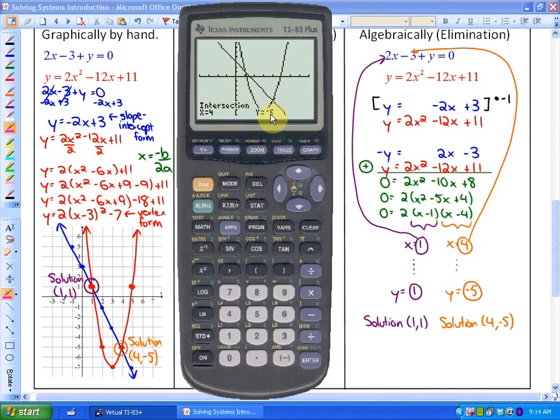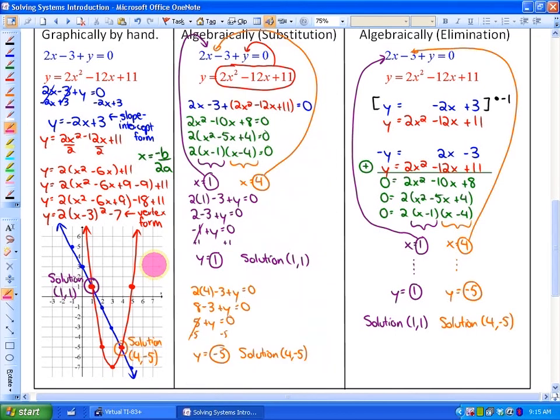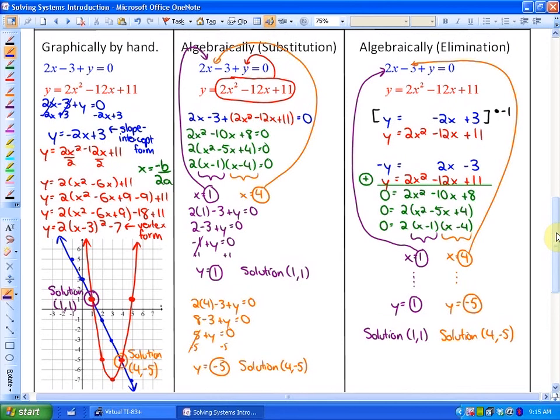So that's method number two using technology. But it's another visual method. The other two methods of focus is algebraically. First method is by substitution. What substitution does is, first of all, a variable has to be isolated in one of the functions, which it is in this second function. Then you can substitute the expression for that variable into the other function. So I'm going to substitute this expression here in for y in the first function.